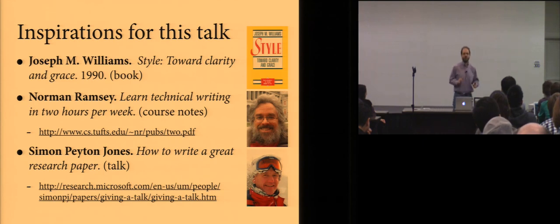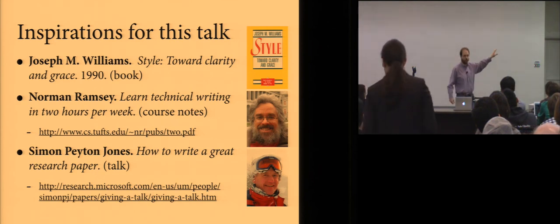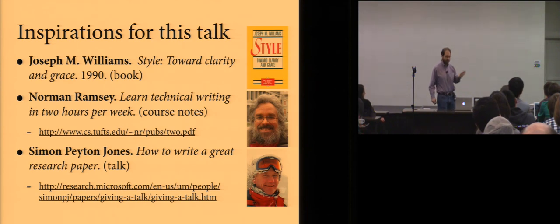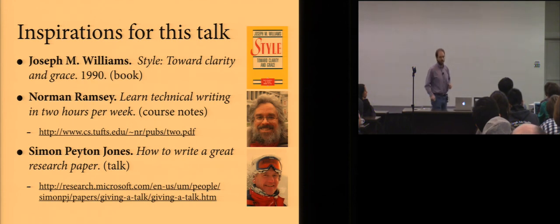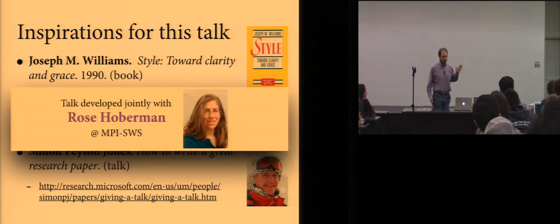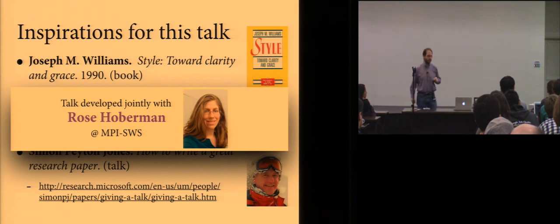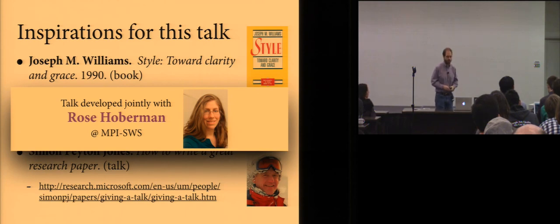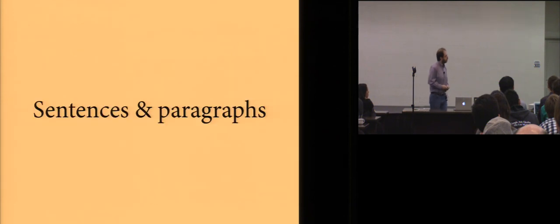Instead, the principles that I am going to focus on in this talk are constructive. And these principles don't come out of nowhere. First and foremost, I want to call your attention to this book by Joseph Williams called Style Toward Clarity and Grace. Norman Ramsey has some course notes based largely on the Joseph Williams book. And Simon Peyton Jones has a very nice talk called How to Write a Great Research Paper. And I would also be remiss if I didn't mention that this talk I really developed jointly with my wife, Rose Hoberman, who teaches courses in communication skills at the Max Planck Institute.